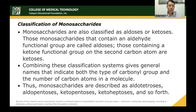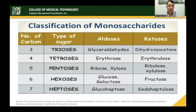For example, aldopentose means aldo (aldehyde), penta (5 carbons), and -ose (sugar), giving aldopentose. Similarly, we have ketopentose, ketoheptose, and so on — aldo meaning aldehyde, keto meaning ketone, and so forth. This is the classification of monosaccharides.